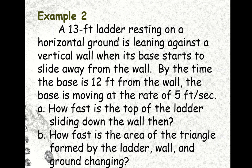Okay. So we have here another example. But I want you to try it. And next time, I will show you the solution to this problem. But first, I want you to attempt it yourselves. Okay. So we have here the example. A 13 foot ladder resting on a horizontal ground is leaning against a vertical wall. When its base starts to slide away from the wall. By the time the base is 12 feet from the wall, the base is moving at the rate of 5 feet per second. Questions. A. How fast is the top of the ladder sliding down the wall then? B. How fast is the area of the triangle formed by the ladder, the wall and the ground changing?